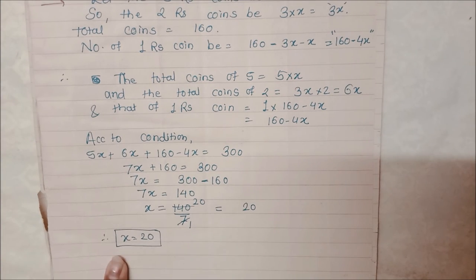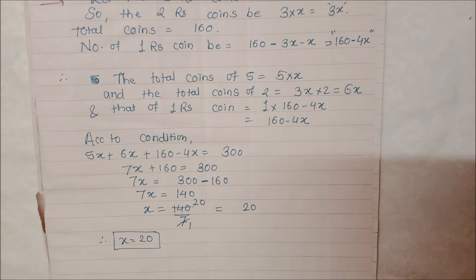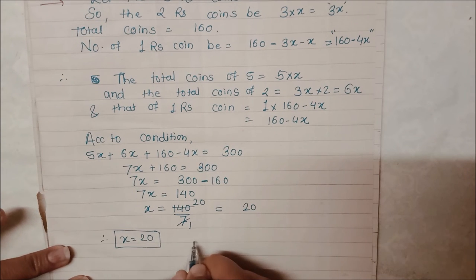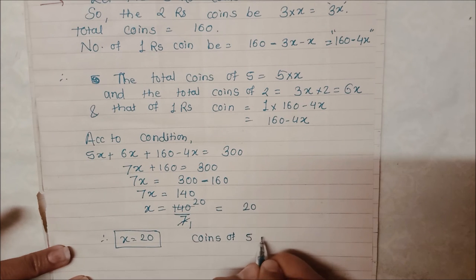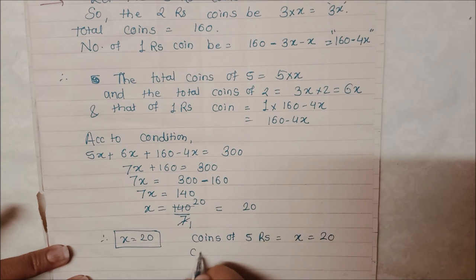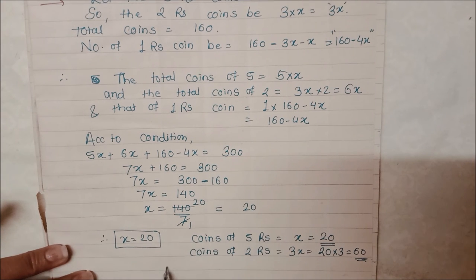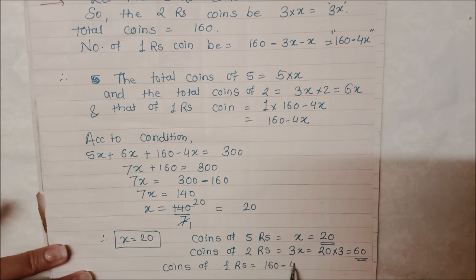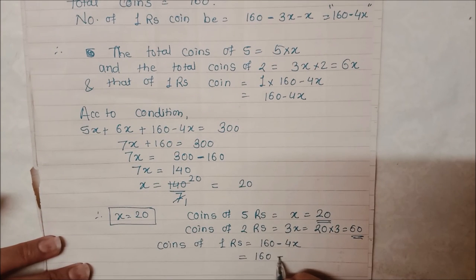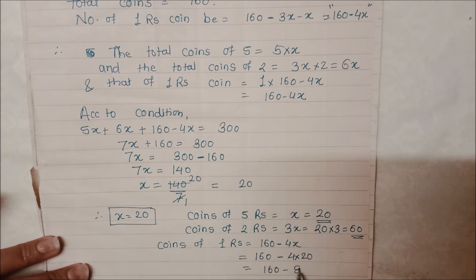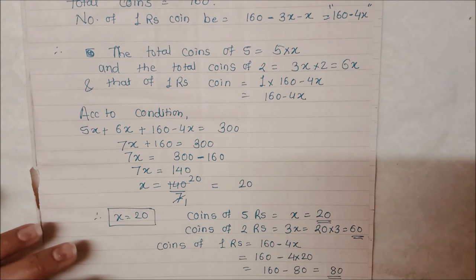Ab hamen pata chal gaya hai ki x ki value 20 hai. To 5 rupee coins kitne honge? x = 20 coins. 2 rupee coins kitne the? 3 times, yaani 3x, matlab 20 into 3, matlab 60 coins. Aur 1 rupee coins: 160 minus 4x, value put karenge — 160 minus 4 into 20, matlab 160 minus 80, to 80 coins. So 1 rupee ke 80 coins hain.